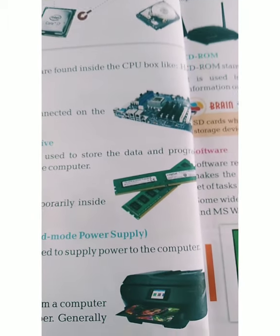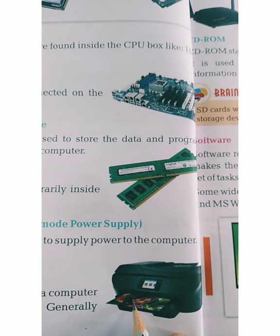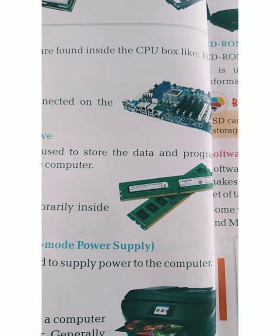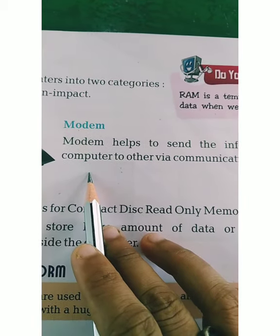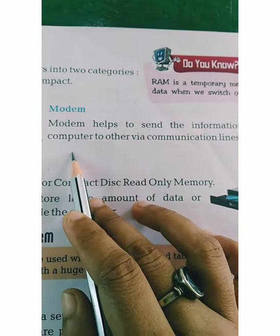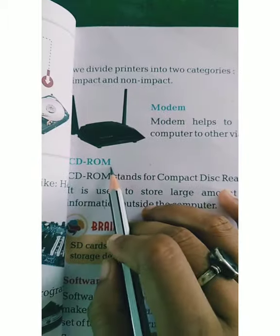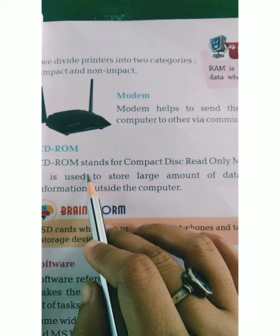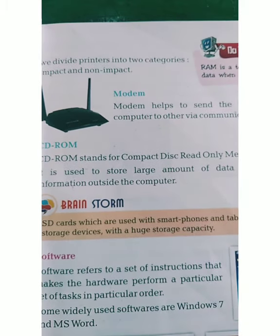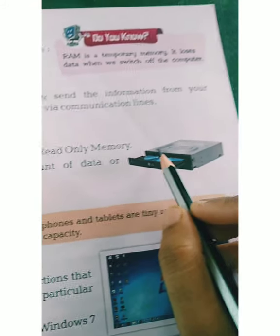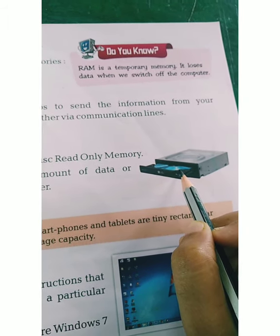If we have to print out any paper, we need a printer. For any extra connection or communication link through our computer, like internet connection, we use a Modem. CD-ROM stands for Compact Disk Read Only Memory. This device is used for your storage. It is a drive but it is external, and it stores data and provides it.